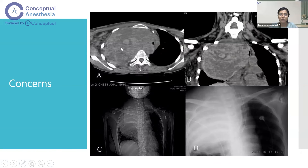The other concern is illustrated by this CT showing a sarcoma present in the mediastinum, demonstrating another example of how mediastinal masses can compromise critical structures. This is the trachea visible here.